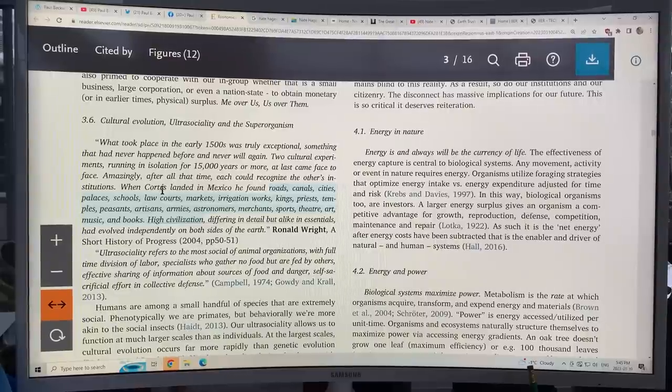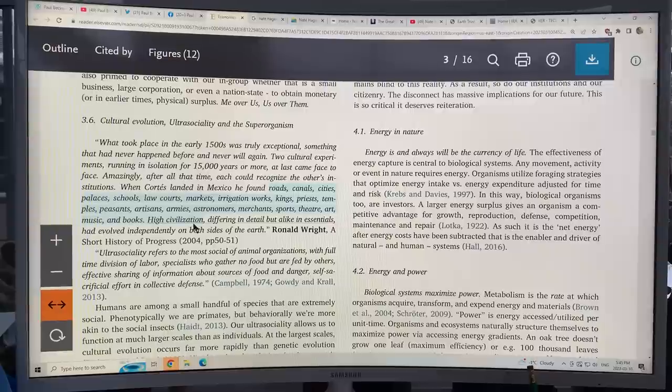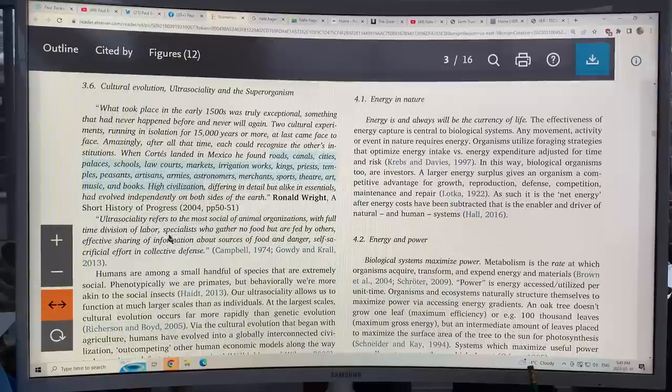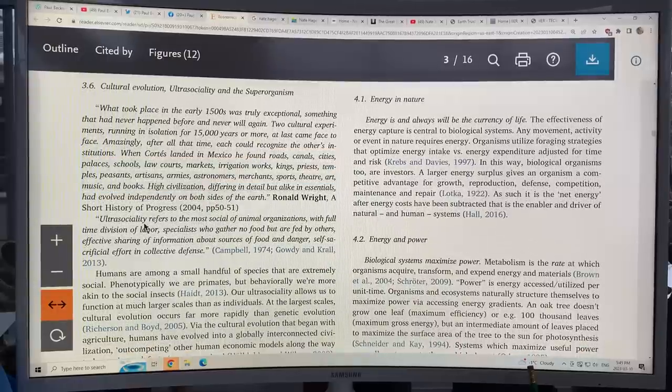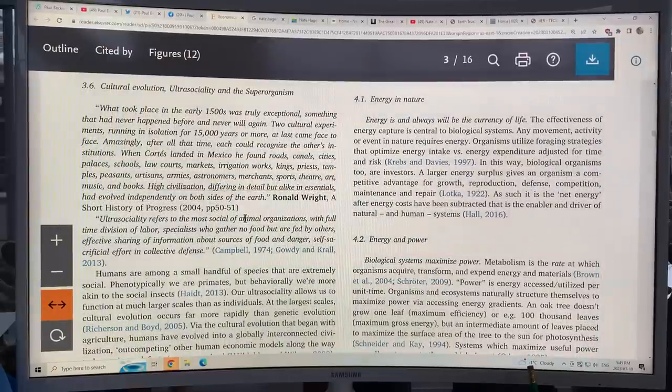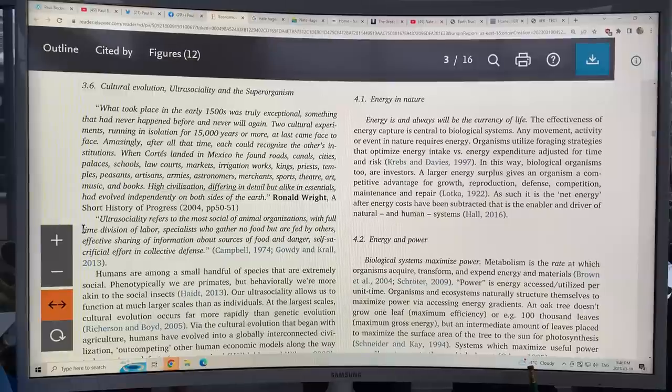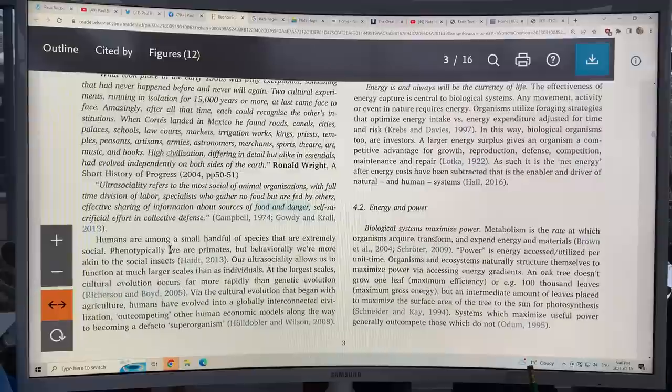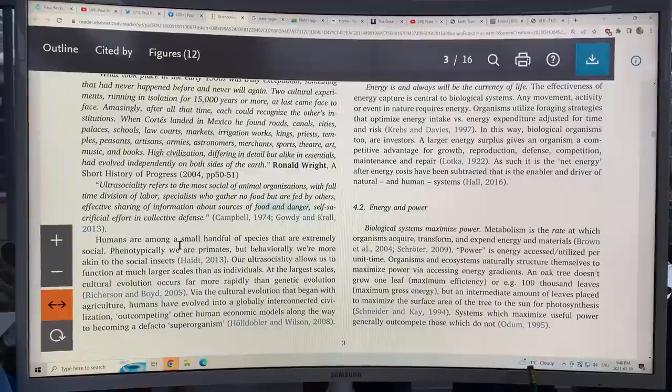People are ultra-social. This refers to the most social of animal organizations. There's full time division of labor, specialists who gather no food but are fed by others, effective sharing of information about sources of food in danger, self-sacrificial effort, and collective defense. So humans, we're only among a small handful of species that are extremely social.